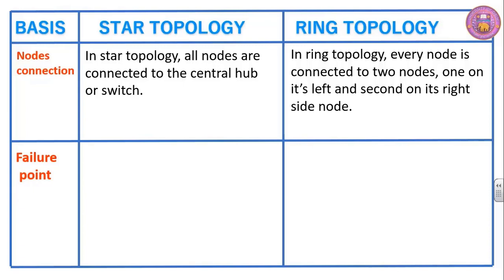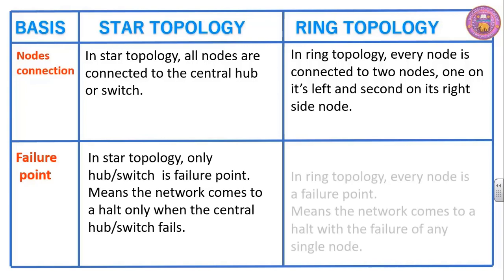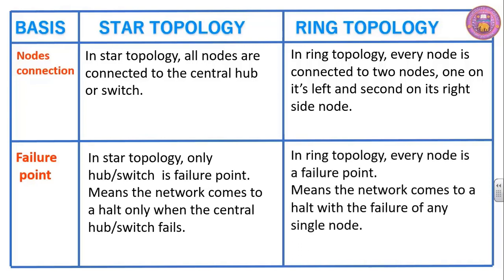Failure point. In star topology only the hub or switch is a failure point, meaning the network comes to a halt only when the central hub or switch fails. In ring topology every node is a failure point, meaning the network comes to a halt with the failure of any single node.